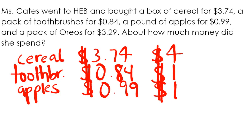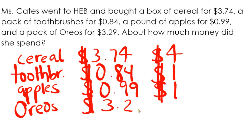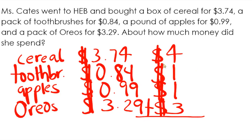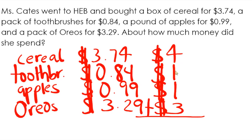And then finally, she bought a pack of Oreos for $3.29. So I'm thinking I need to use a little bit of estimation. Is $3.29 closer to $3.00 or is it closer to $4.00? In this case, it's actually closer to $3.00. So now I can simply add, because they're asking how much total money she spent. So I have $4.00 plus $1.00 is $5.00, plus $1.00 is $6.00, plus $3.00 is $9.00.